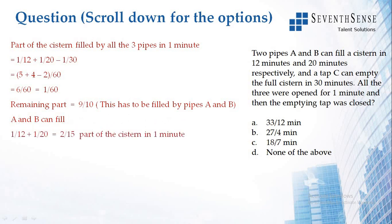So that is why A and B can fill that remaining part by, that is 1/12 plus 1/20 is equal to, when you simplify it, 2/15th part of the cistern in one minute. So A and B when working together will fill 2/15th part of the cistern in one minute.